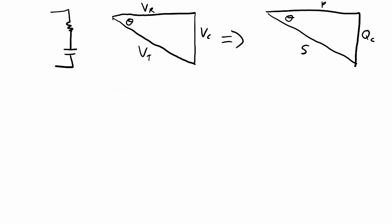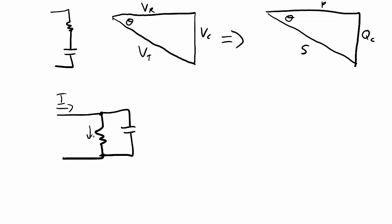A very similar exercise can be done with components in parallel. We can create a current diagram made up of total current, current through the resistor, and current through the capacitor, and derive the power triangle from that. I'll leave that as an exercise for you. The purpose of this video was to give you an intuitive understanding of where the power triangle comes from.